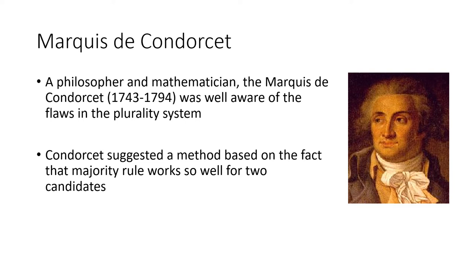Back in the 18th century, a philosopher and mathematician named the Marquis de Condorcet was well aware of the flaws in the plurality system that they were using at the time. So Condorcet suggested a method that was based on the fact that majority rule is this perfect, great system for two candidates — we want to try to adapt that to the situation where we have more than two candidates.